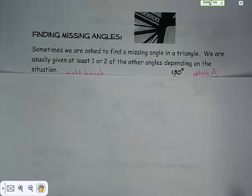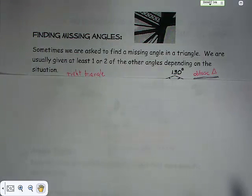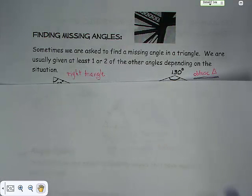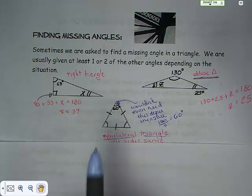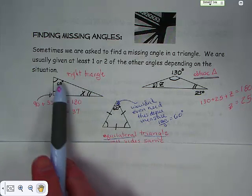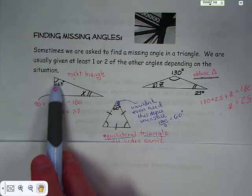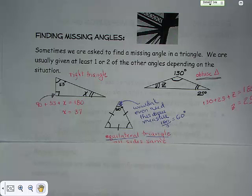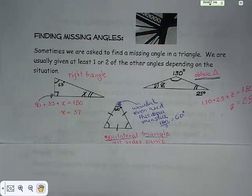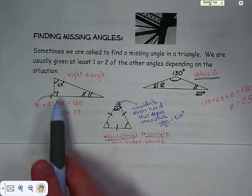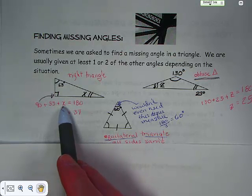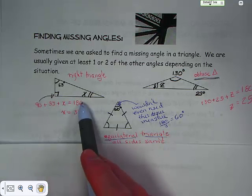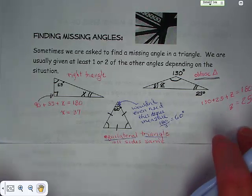Sometimes you end up with a situation where you're finding a missing angle. They'll give you two angles and ask what the third is. In this case, you have a right angle, 53 degrees, and x. All angles in a triangle must add up to 180 degrees. So you take 90 plus 53, add them together, then subtract from 180, and you get 37. That is a right triangle.